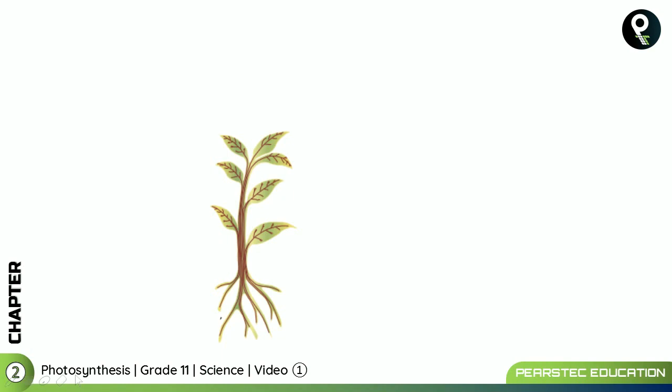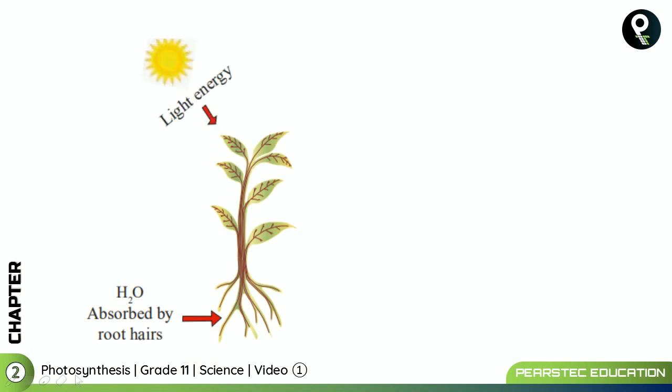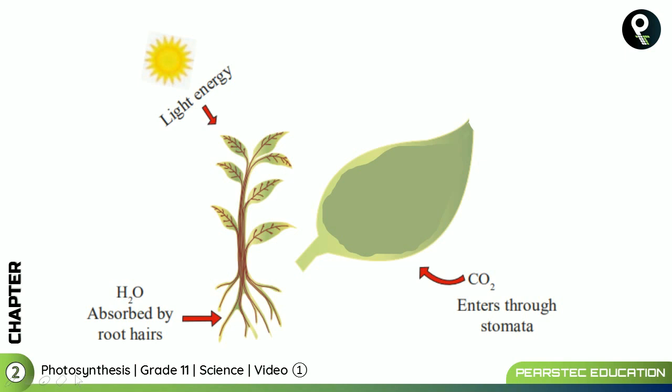We're getting back to the real subject — photosynthesis. This particular plant needs raw materials for its food preparation. It doesn't have a kitchen, but it has a typical mechanism to create its own food. It needs water, which is absorbed by the roots. It also needs light energy, and carbon dioxide enters through the stomata of the leaves. But carbon dioxide, water, and light energy are not sufficient enough.